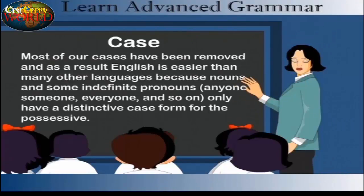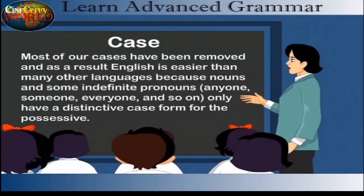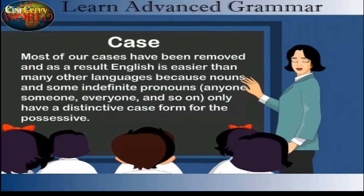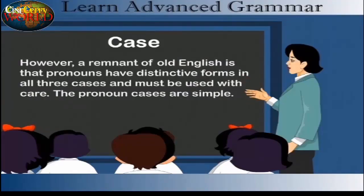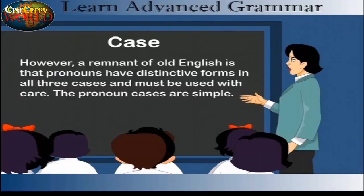Most of our cases have been removed, and as a result English is easier than many other languages, because nouns and some indefinite pronouns — anyone, someone, everyone, and so on — only have a distinctive case form for the possessive. However, a remnant of Old English is that pronouns have distinctive forms in all three cases and must be used with care.